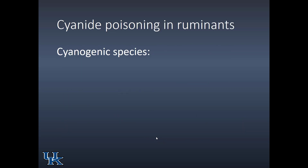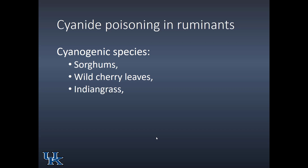Let's look at the species we need to be careful with to avoid or prevent cyanide toxicity. We've mentioned the forage sorghums and Sudan grasses, as well as their perennial cousin Johnson grass. Wild cherry leaves are also a potential source. Indian grass might not be on your list, but if you recall its scientific name — Sorghastrum nutans — it is related to sorghum and does have prussic acid potential.